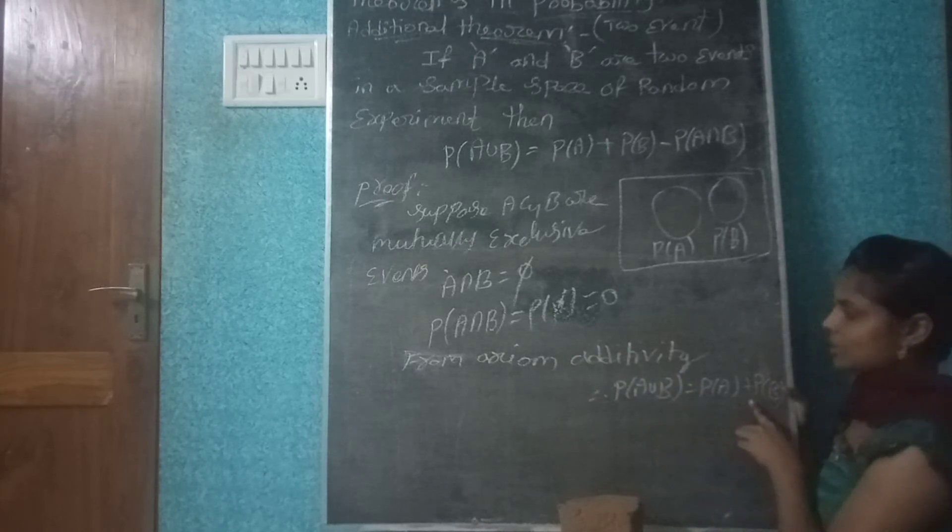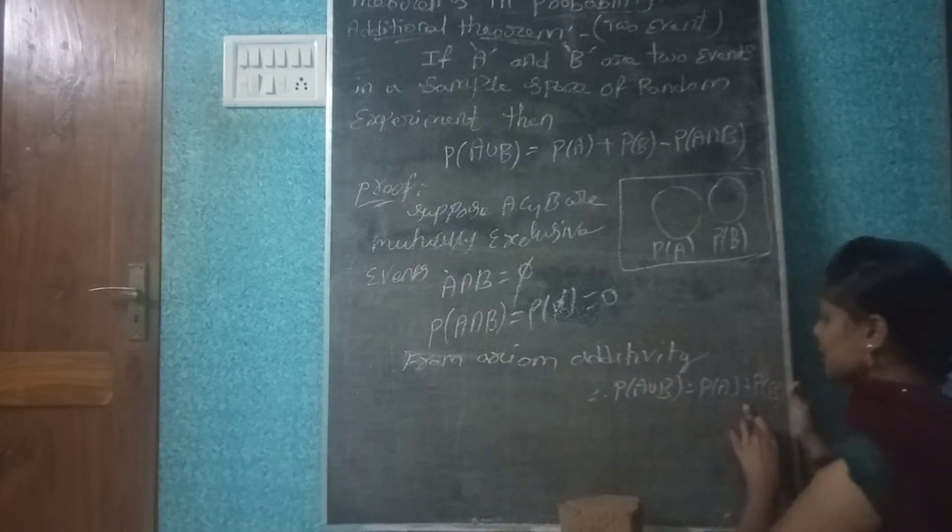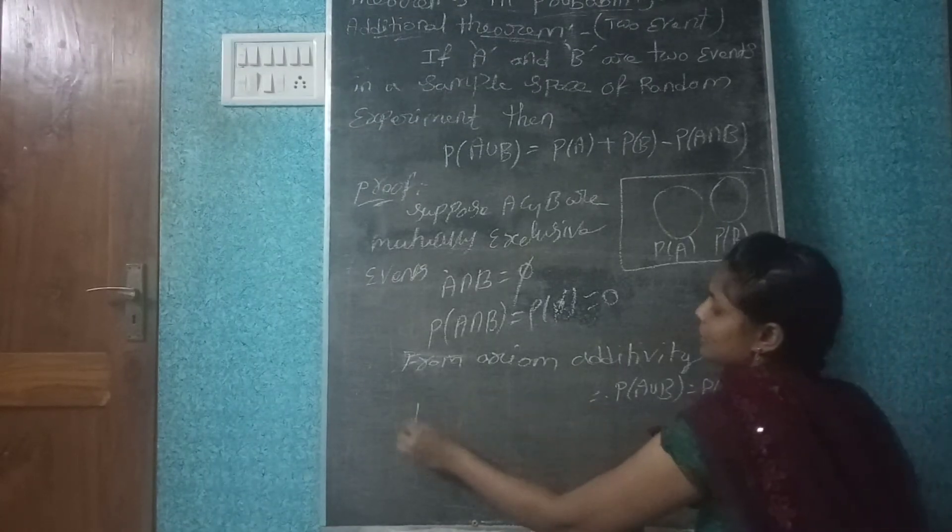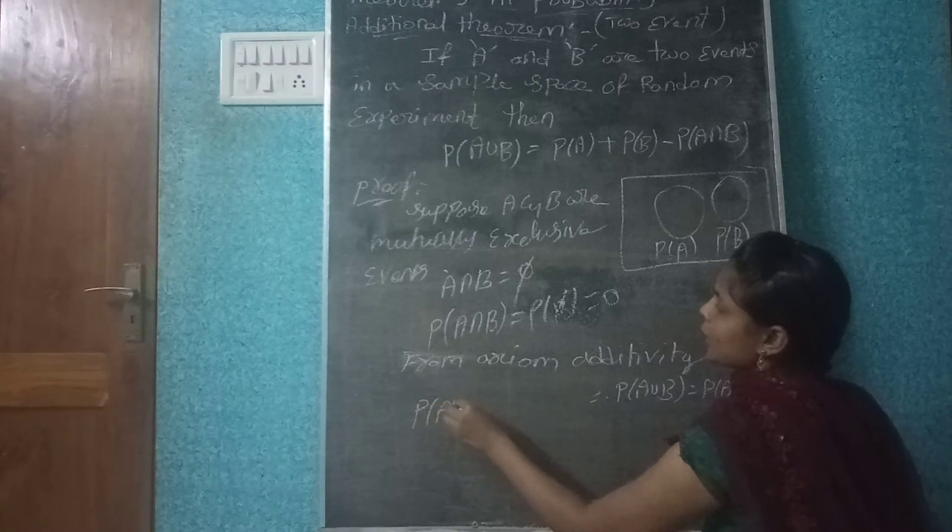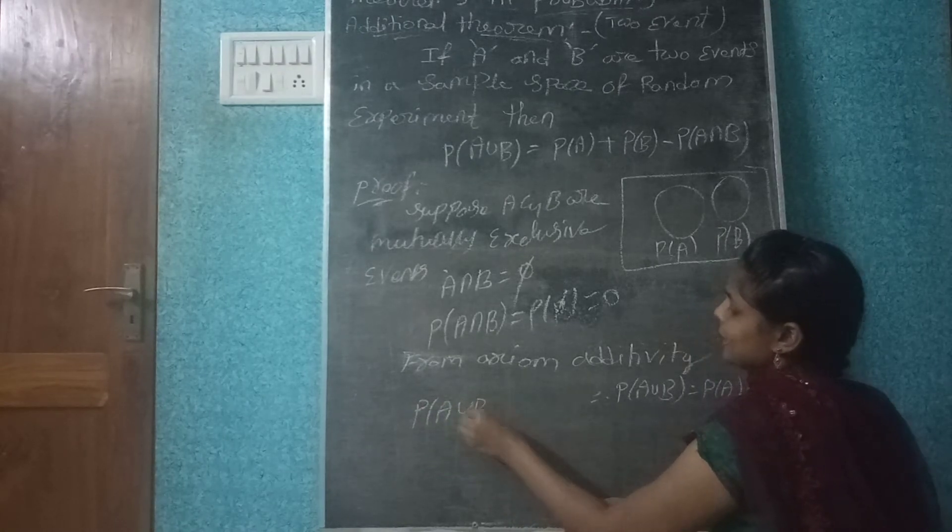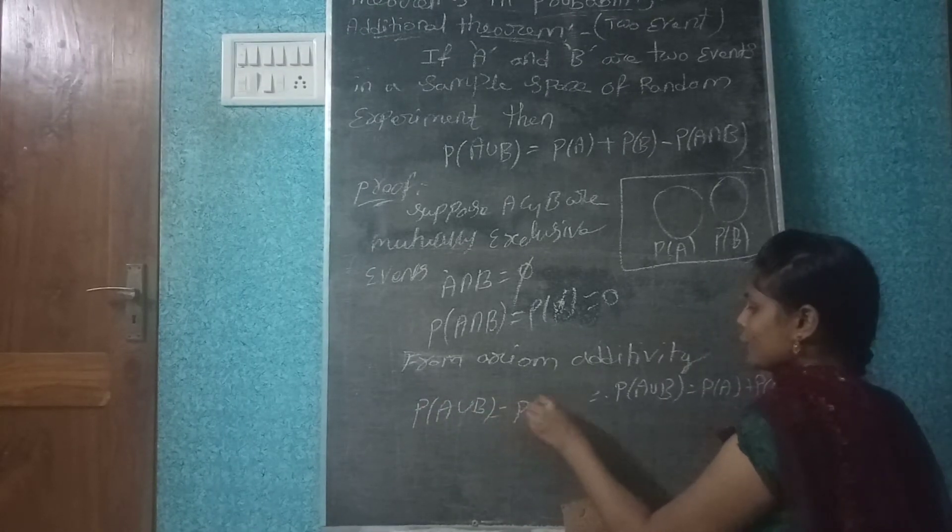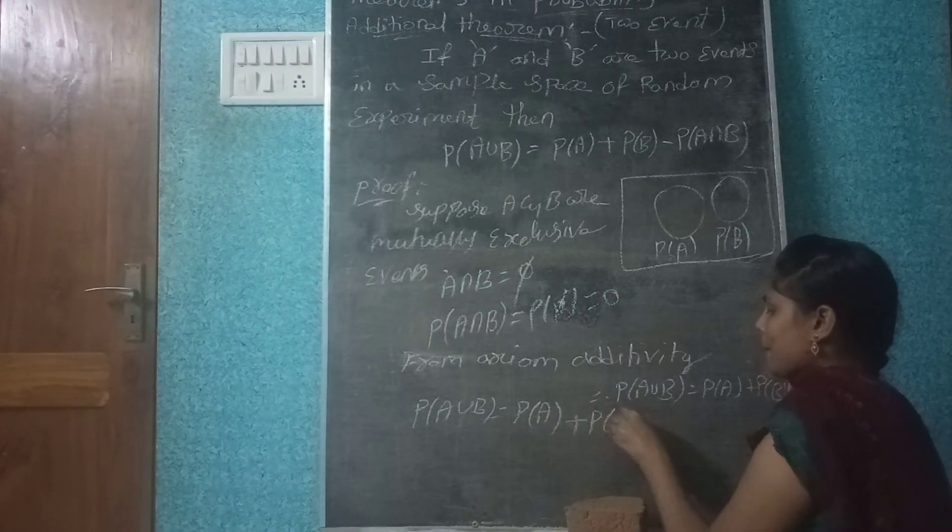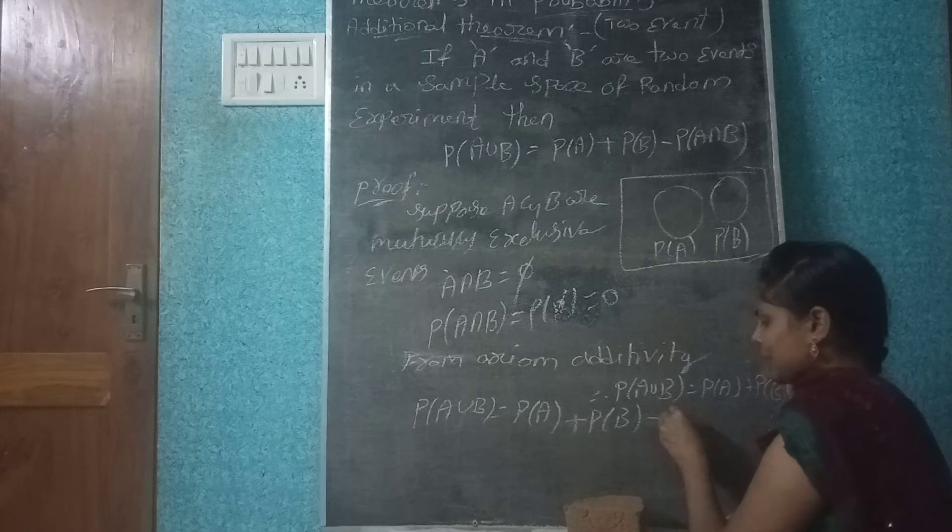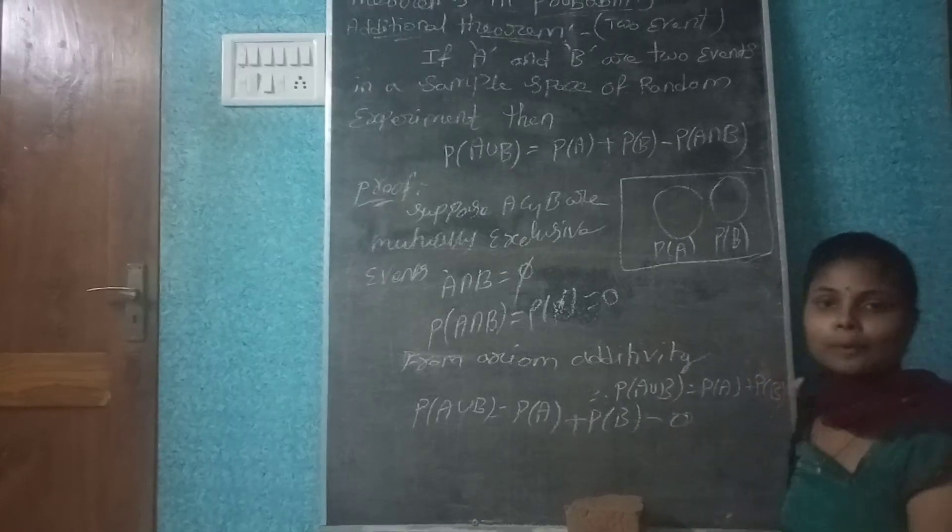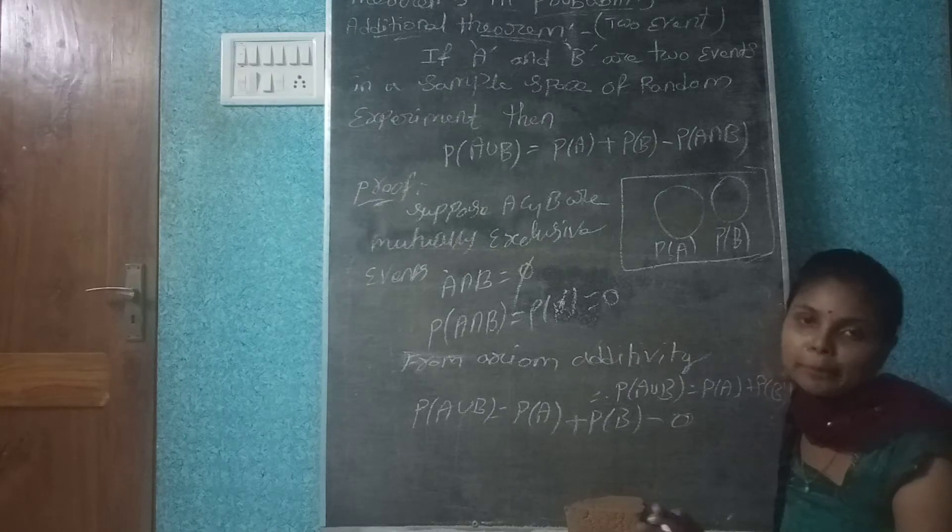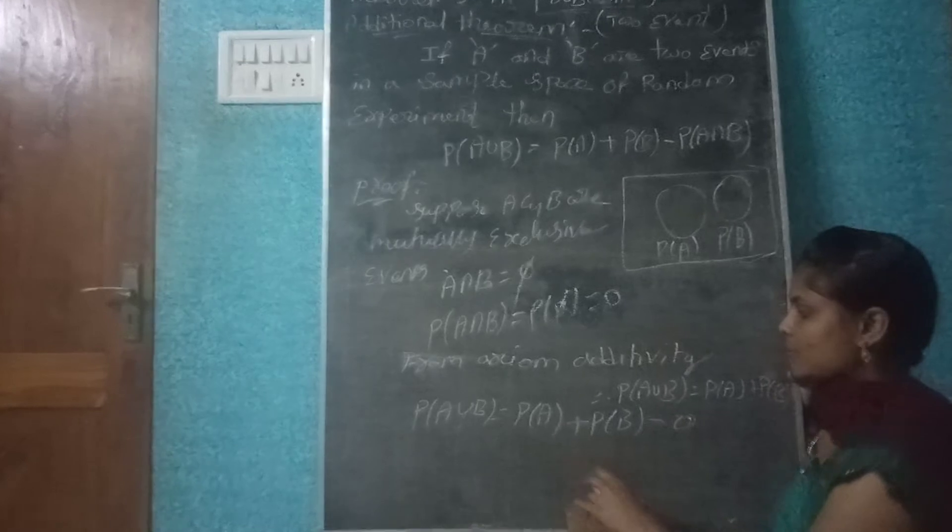comes additivity. P of A union B is equal to P of A plus P of B minus 0. It's about minus 0.